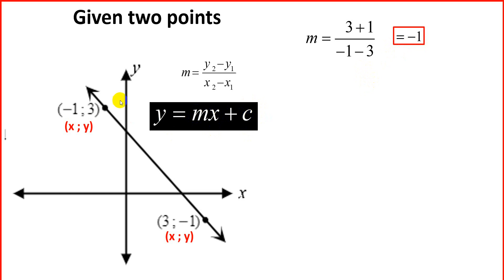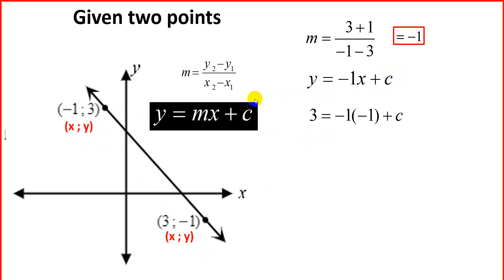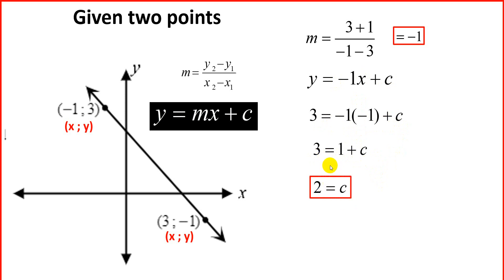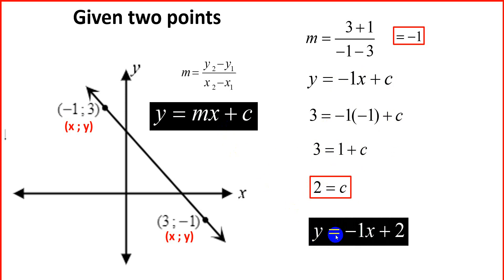We now need the y-intercept, but you'll notice the y-intercept is not given. So we use our equation y equal to mx plus c. We know m is minus 1, giving us minus 1x plus c. Our mission now is to find c. We substitute a point — I'm going to choose the first point: y is 3 and x is minus 1. So, 3 equals minus 1 times minus 1 plus c, which gives us 3 equals plus 1 plus c, so c equals 2. We're now ready to substitute into the equation: y is equal to minus 1x plus 2.